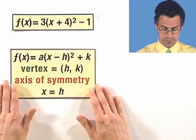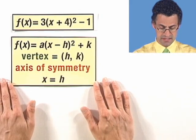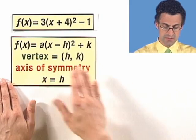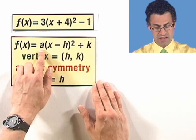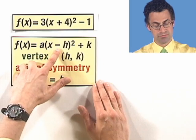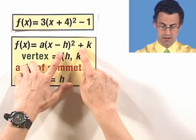Well, if it's in this form, it's actually pretty easy. Here's the secret: write it in this generic vertex form, which is some constant a times the quantity x minus h, all squared, plus k.